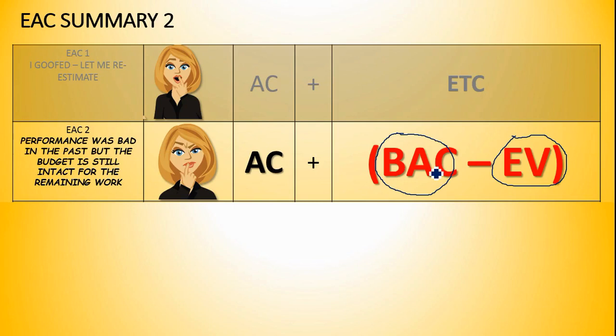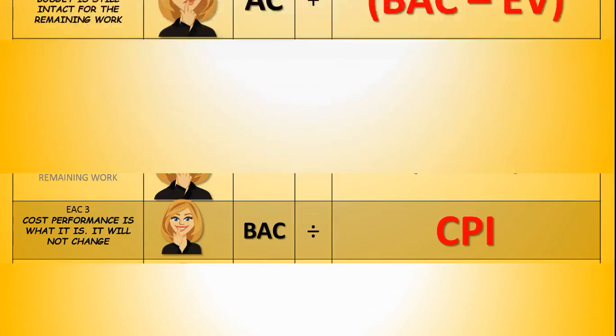You see, because the budget still stands. So the work that we've got done is the EV. Actual cost is how much you've spent. So if you add up how much you've spent, plus the total amount of the budget for the project, minus the value of the work you've got done, that will give you an estimate at completion based on the budget still being intact. You see? So that is very important to know.